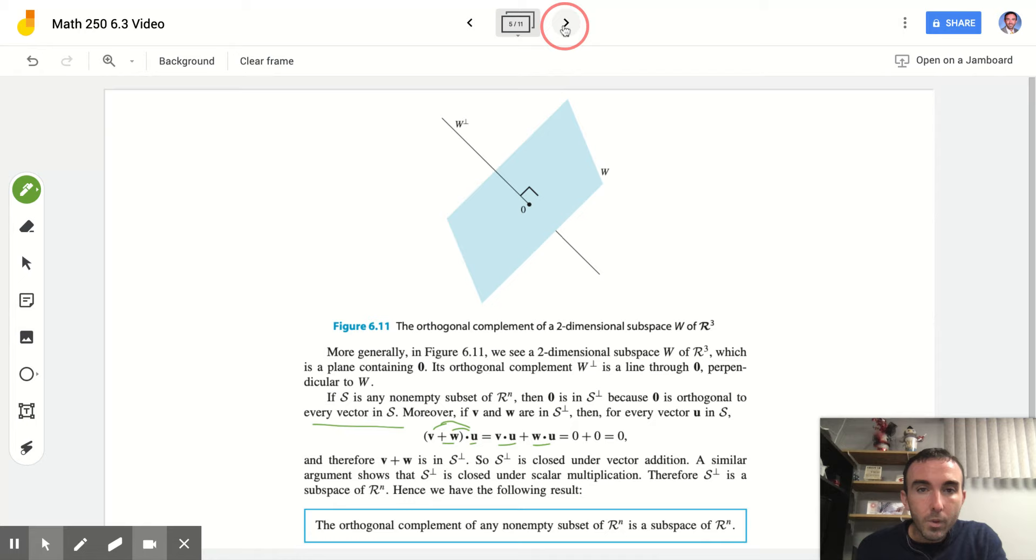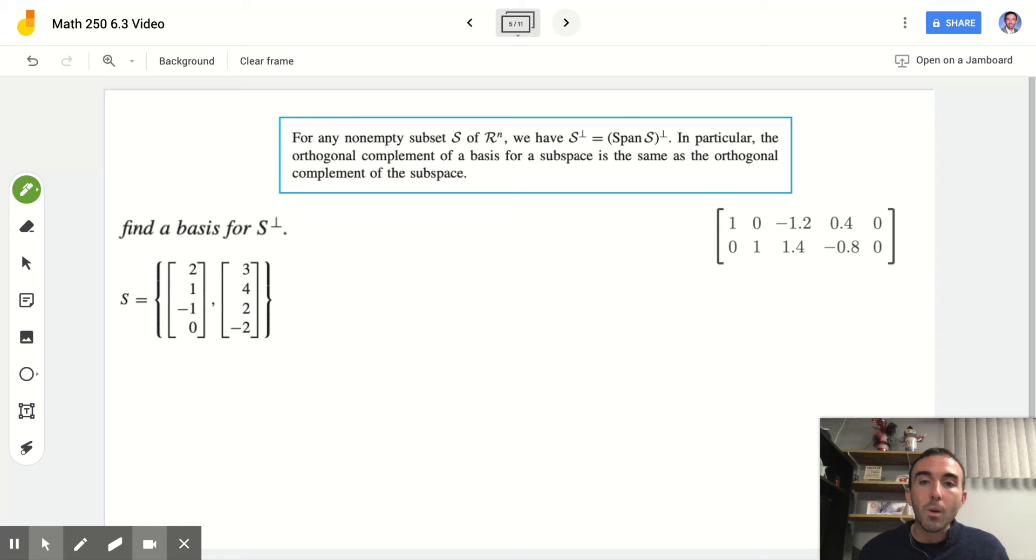The orthogonal complement of any non-empty subset of R^n is a subspace of R^n. That's a great little tidbit for us to use. In addition, for any non-empty subset S of R^n, we have S perp equals span of S perp. In particular, the orthogonal complement of a basis for a subspace is the same as the orthogonal complement of the subspace. And we're going to work out a problem that deals with this right now.